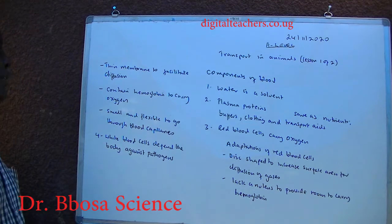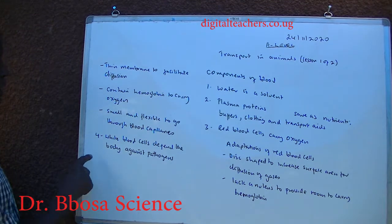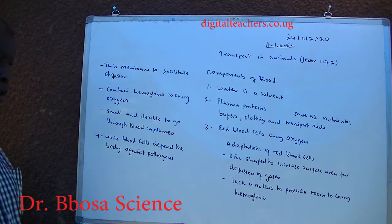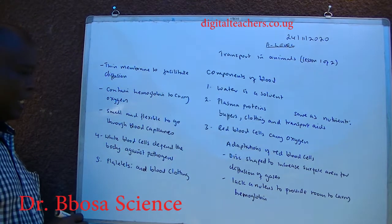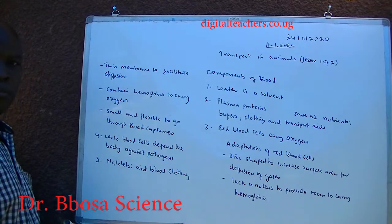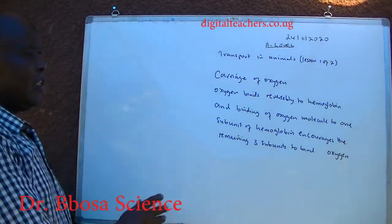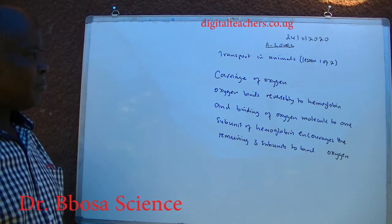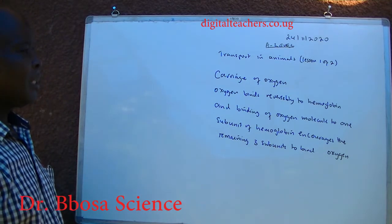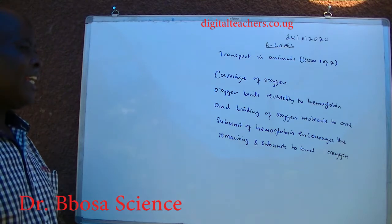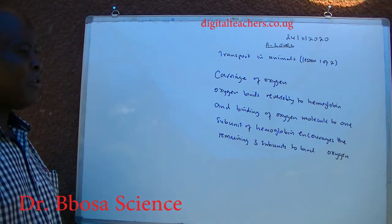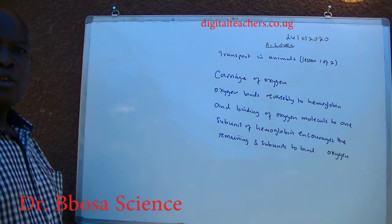Contains hemoglobin to carry oxygen. They are small and flexible to go through blood capillaries. 4. white blood cells defend the body against pathogens. 5. platelets aid blood clotting. Oxygen binds reversibly to hemoglobin, and the binding of one oxygen molecule to one subunit of hemoglobin encourages the remaining three subunits to bind to oxygen.